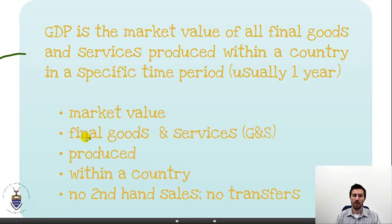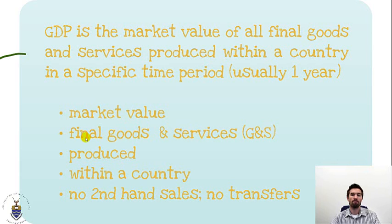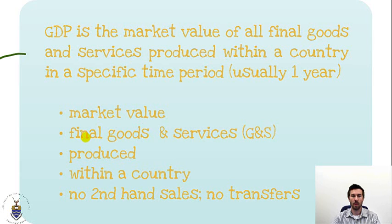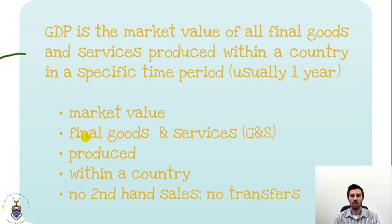GDP covers final goods and services, which means intermediate goods and services are not included. For example, if you buy something like an iron for ironing your clothing, and the value of that iron is a hundred Rand, then GDP in South Africa went up by 100 Rand when that iron was created and sold. We don't separately include the piece of metal valued at five Rand, the piece of plastic, the electrical cord — all of those had value, and that value might have been 50 Rand. But we assume that value is included in the final price of the iron.